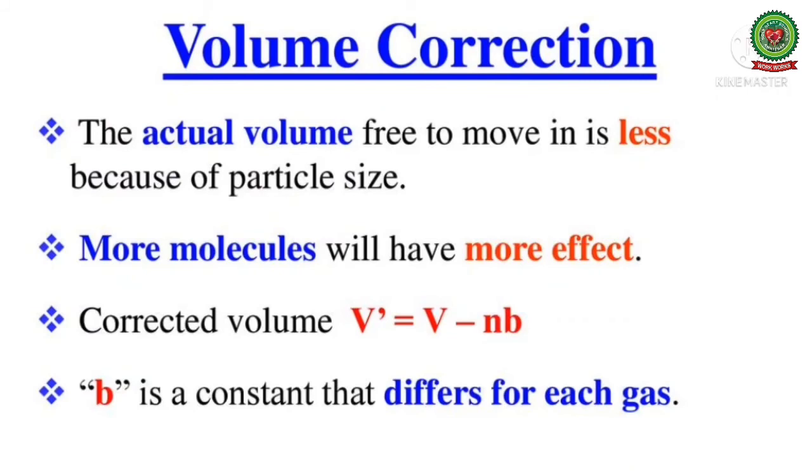Volume correction: Van der Waals assumed that molecules of a real gas are rigid spherical particles which possess a definite volume. The volume of a real gas, that is the volume available for compression, is the actual volume minus the volume occupied by the gas molecules. If B is the effective volume of the molecules per mole of the gas, then the ideal volume for the gas equation is V minus B.